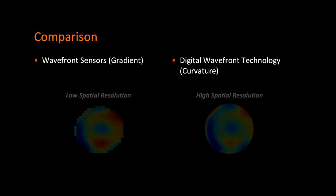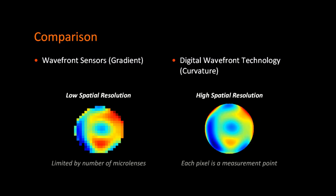While microlenses limit the amount of measurement points, the digital wavefront technology uses every pixel, so the wavefront resolution is directly related to the number of pixels in the camera.